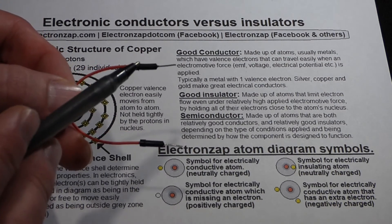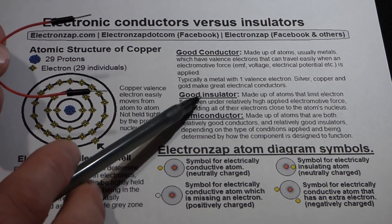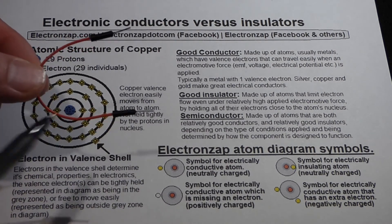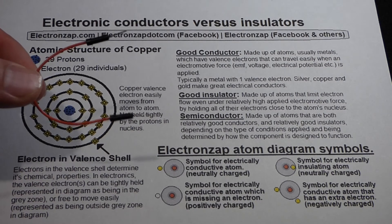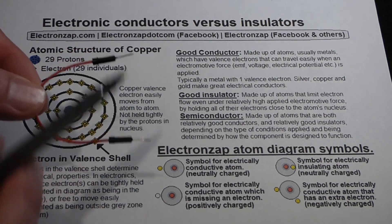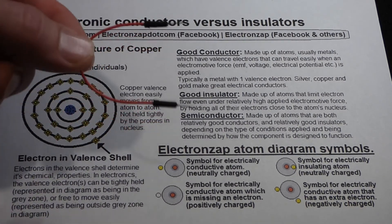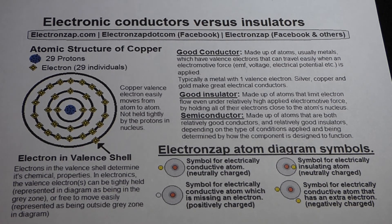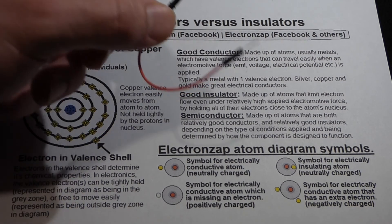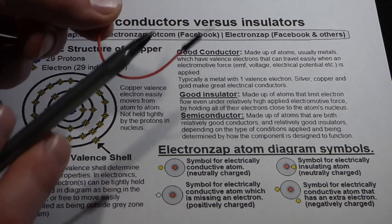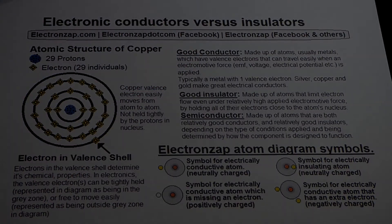Conductors normally have insulation around them. Insulators are made of atoms that do not conduct current very well. Also, metal corrodes easily, so the insulation — which is plastic — doesn't corrode and helps protect the wire from corrosion and physical damage. It acts as an electrical insulator, so if another wire is placed nearby, the plastic prevents an unintended conductive path between them.